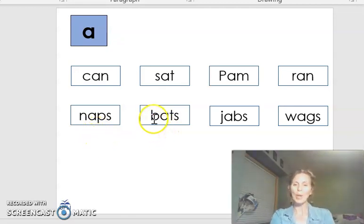Here we go, another word. B, A, bat, T. Bat, what is the word? Bats, very good.